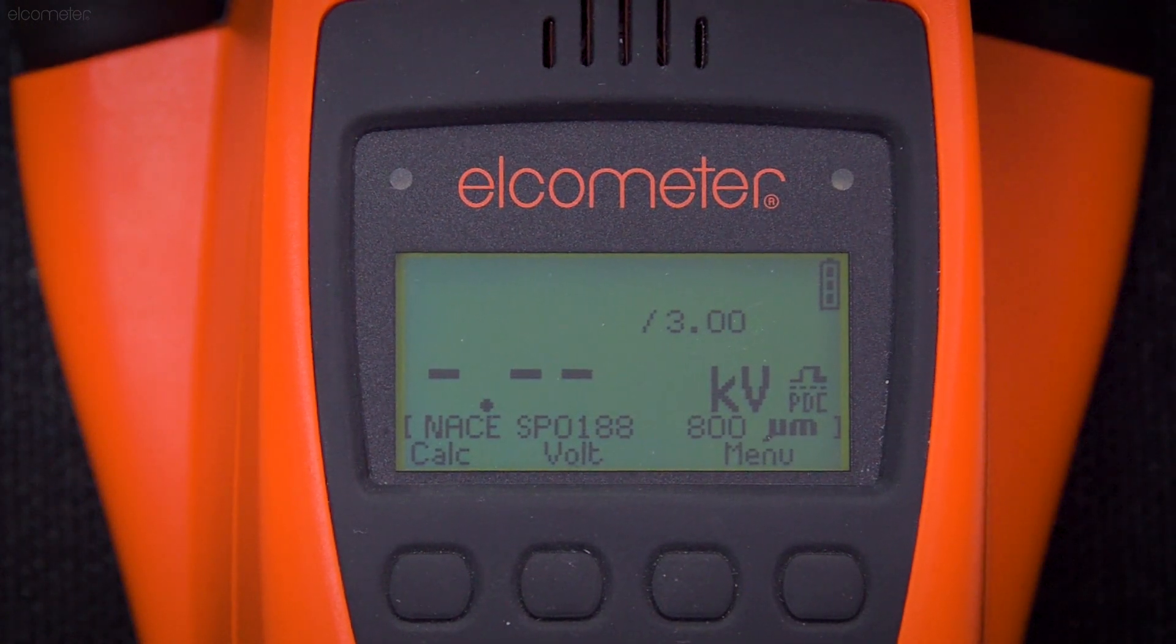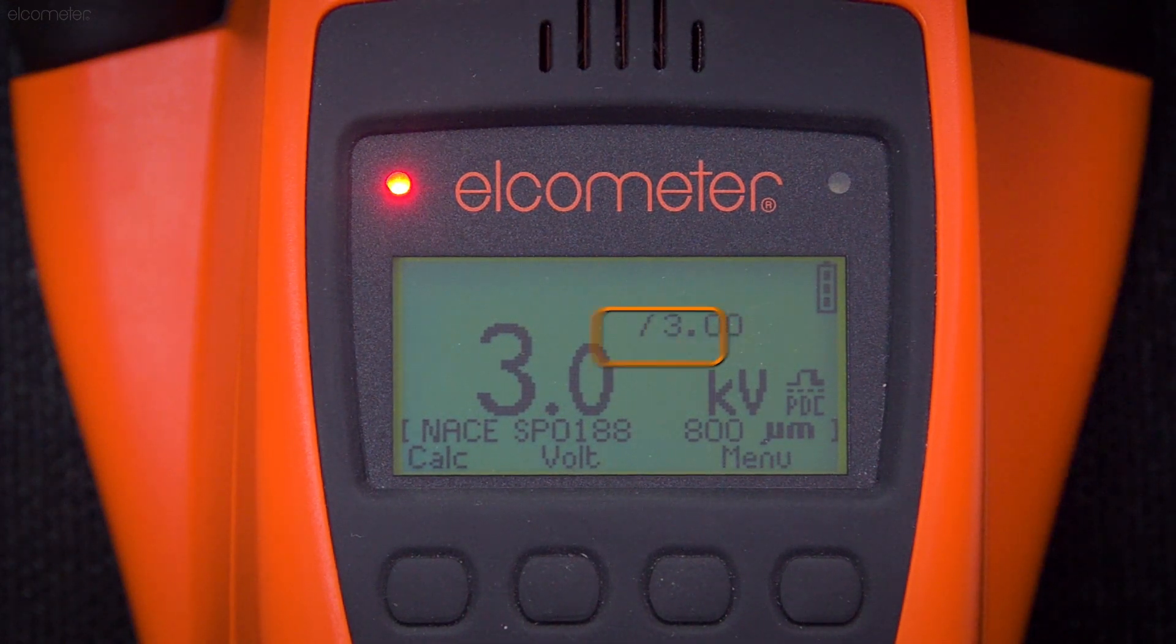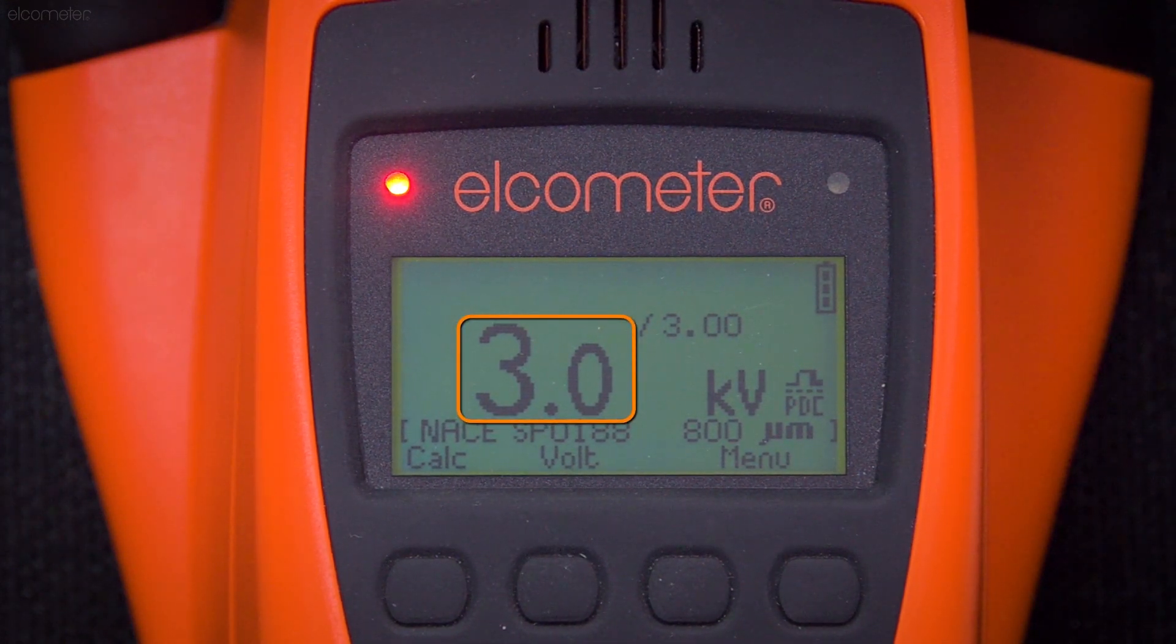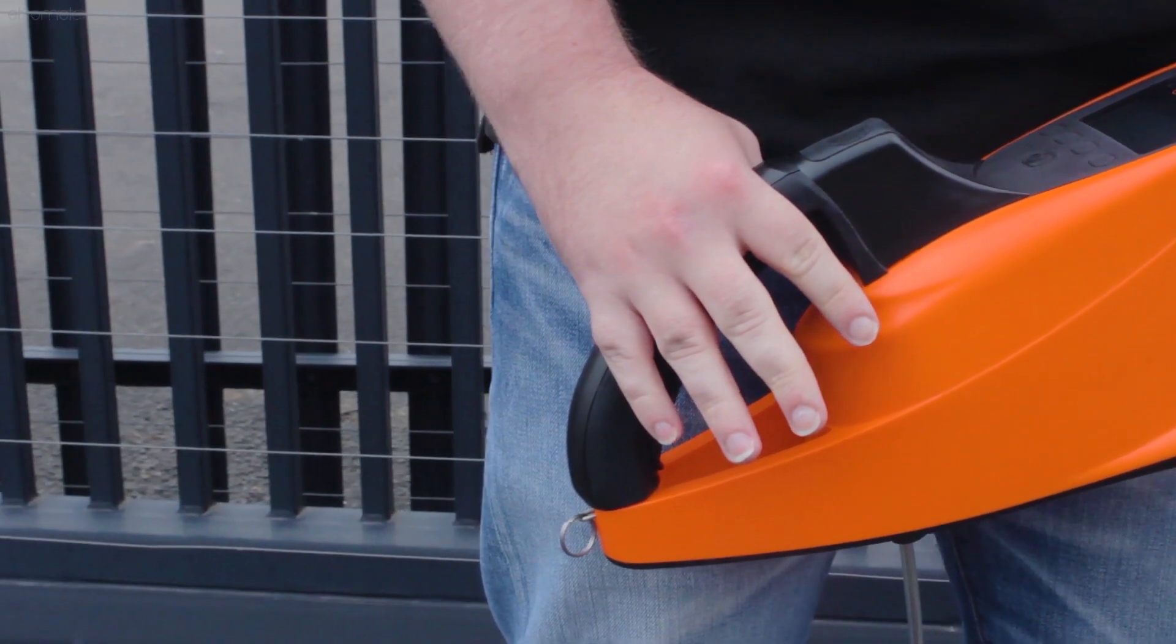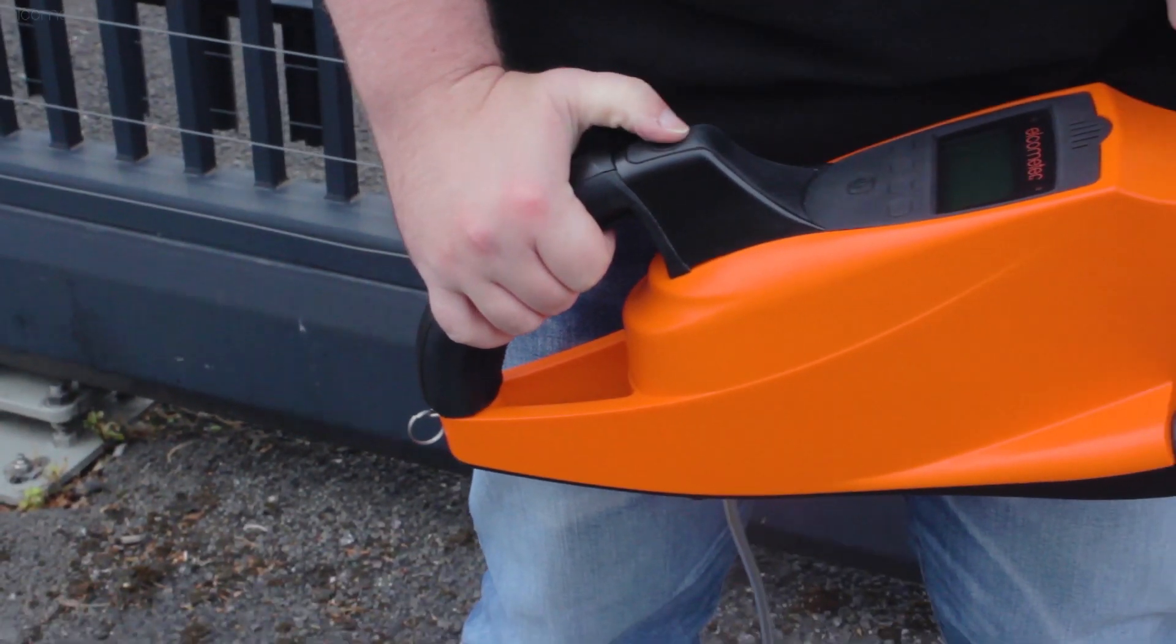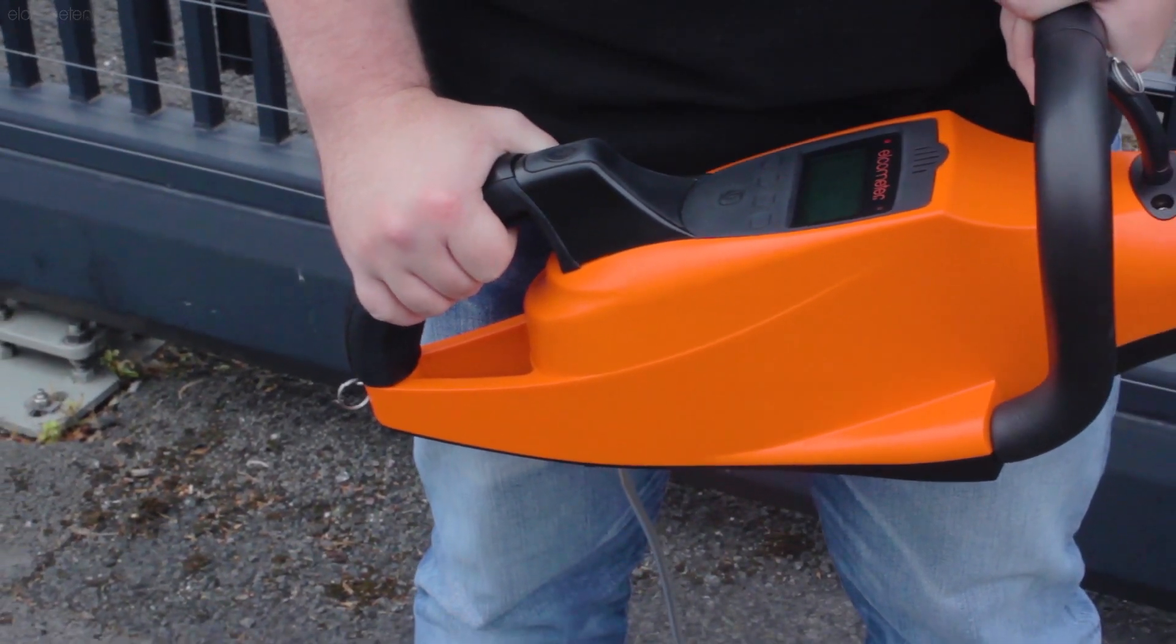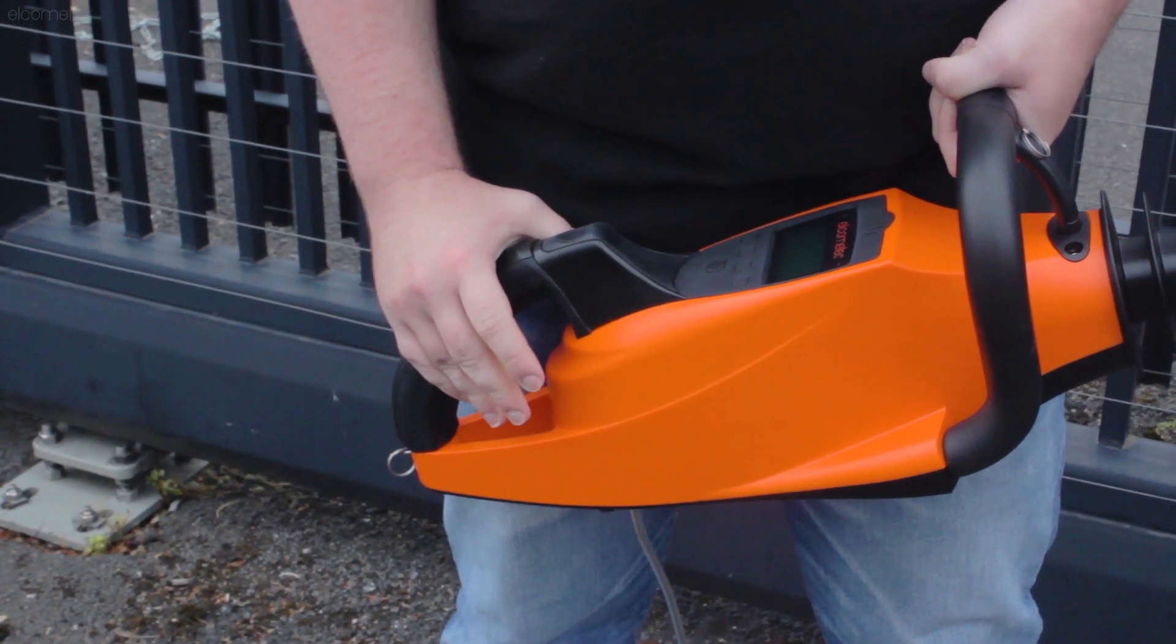Furthermore, the Elcometer 280 has an internal Jeep tester, ensuring your chosen voltage matches your actual test voltage. To ensure safe testing, voltage isn't sent to the probe until the two-stage safety switch is activated, which avoids accidental switch-on, and automatically cuts power to the probe should you lose grip of the handle.